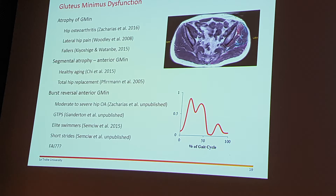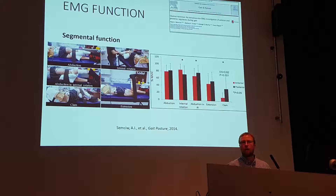Glute min is divided into segments — it has anterior and posterior structurally unique and functionally unique segments. Of those, anterior glute min tends to atrophy and get fatty infiltrate more so than posterior. So if there were an avenue for targeted rehab in a lot of these conditions, anterior glute min might be a component that we could look into.